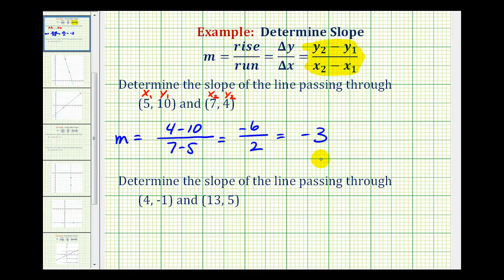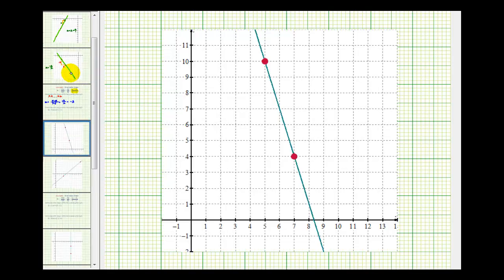To get a better understanding of what this means, let's take a look at the line passing through these two points. Remember we said the slope of this line was equal to negative 3. If we move from this point to this point...